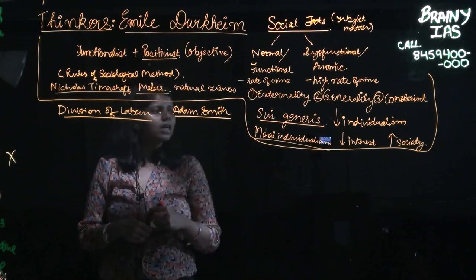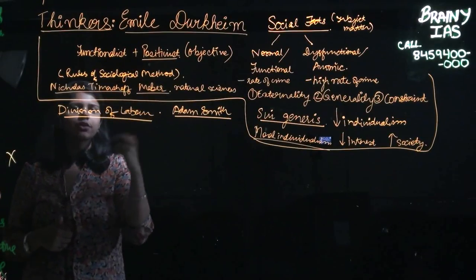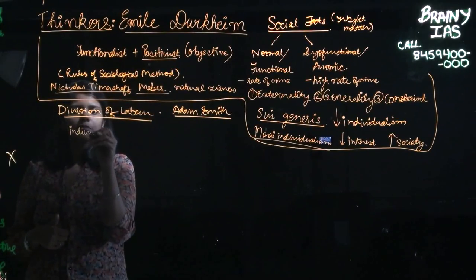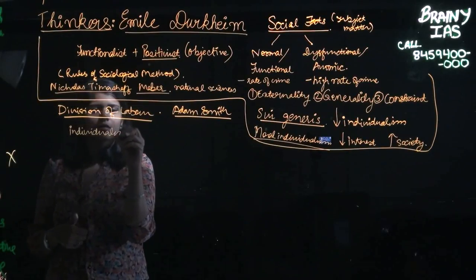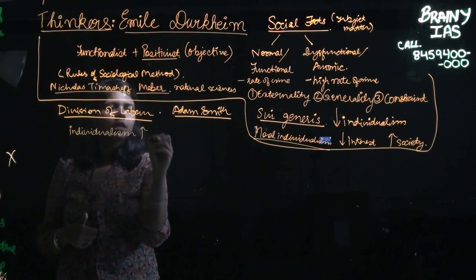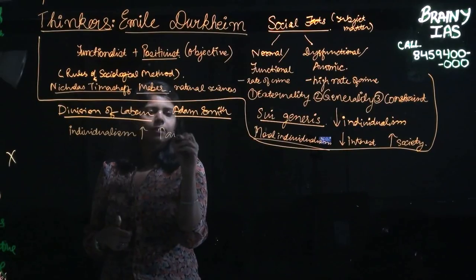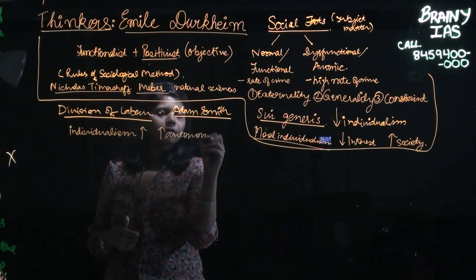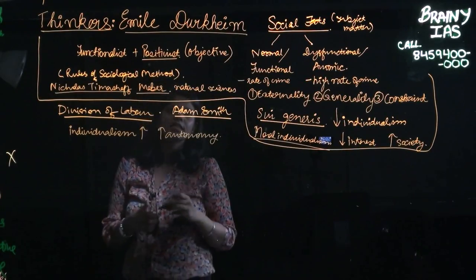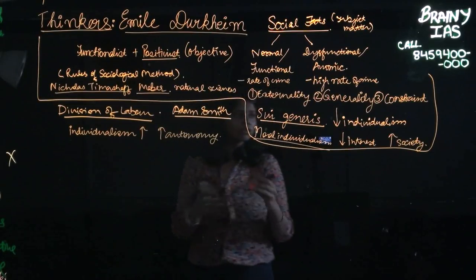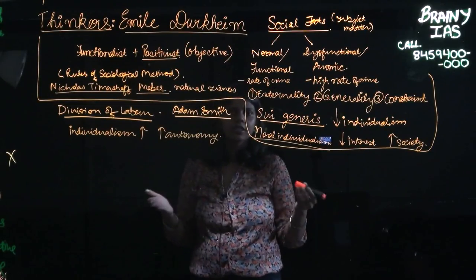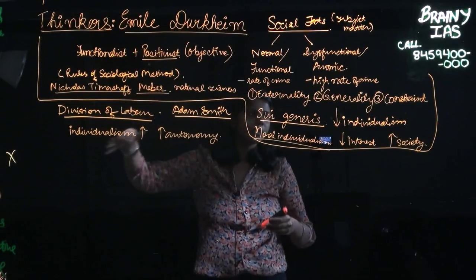He sees that when there is an increase in individualism, there is an increase in autonomy. And this leads to division of labor. And there is also a direct increase in division of labor when the autonomy increases.